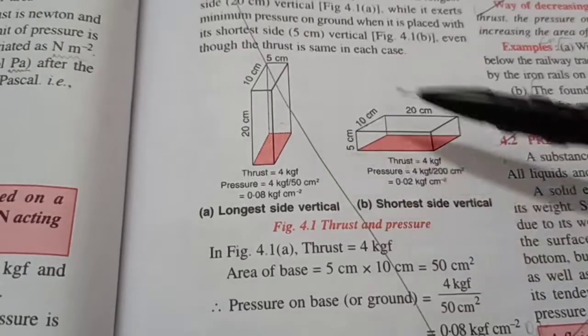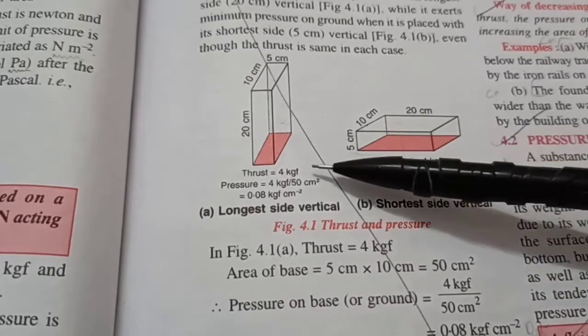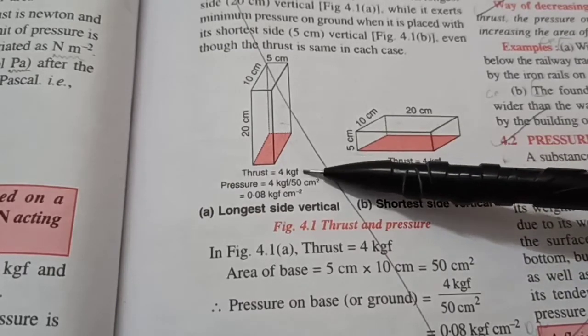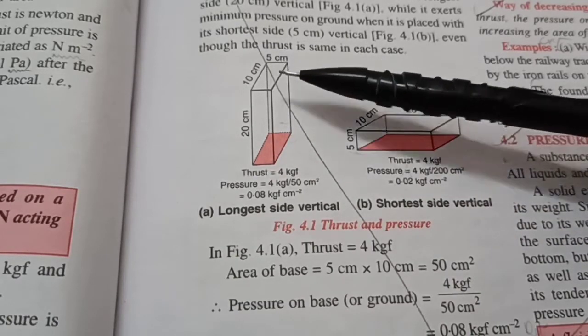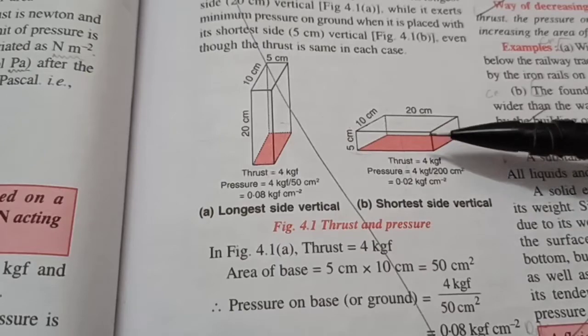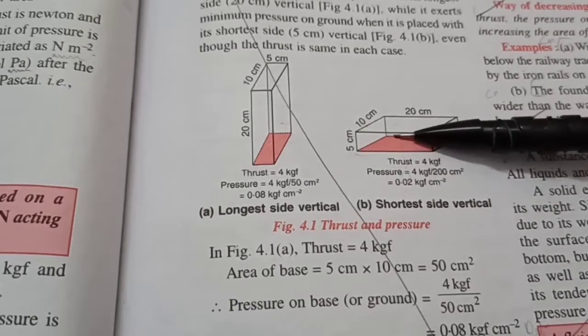Let's study 9th standard ICSE Physics Chapter 4, Section A, Pressure-Influence. Consider a brick with these dimensions. It is kept on sand or clay. In the first case it is standing upright and in the second case it is sleeping horizontally. It's the same brick but different configuration.